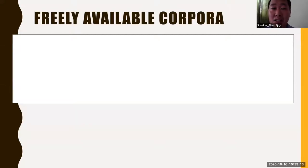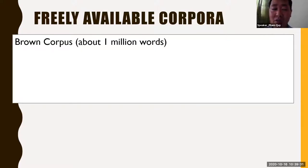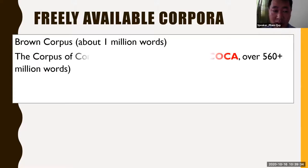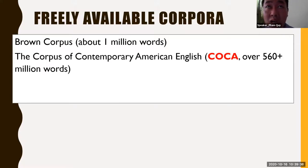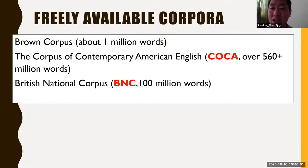On the market right now we have some readily available corpora that researchers and teachers can use for research and teaching. We have the Brown Corpus, which has around one million words. We also have the Corpus of Contemporary American English, which has around 560 million words — a huge amount. We also have the British National Corpus, BNC, which has around one hundred million words. If you want to analyze linguistic patterns in American English, you might want to use COCA. If you want to analyze patterns in British English, you might use the British National Corpus.